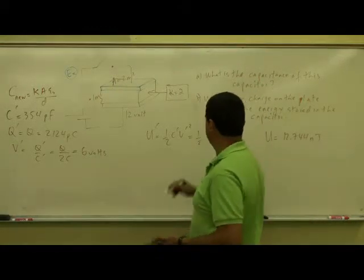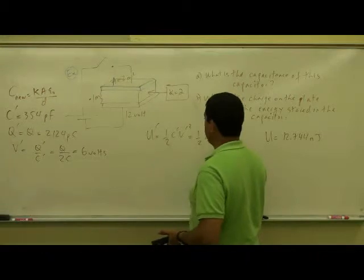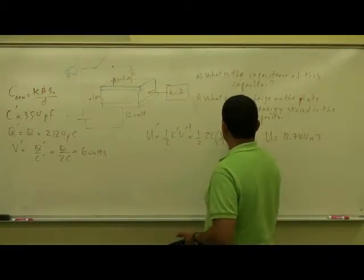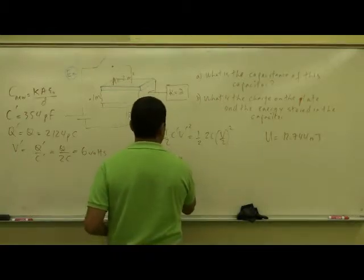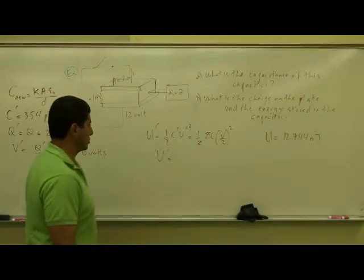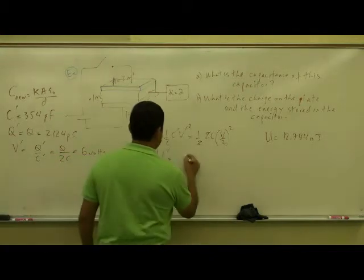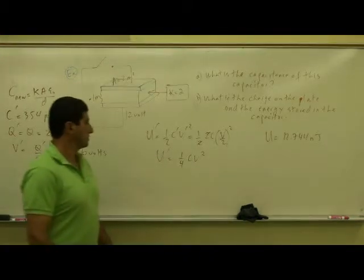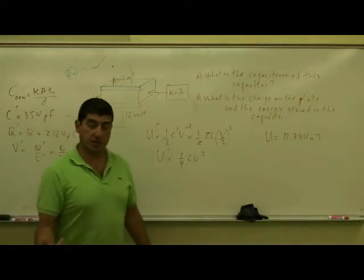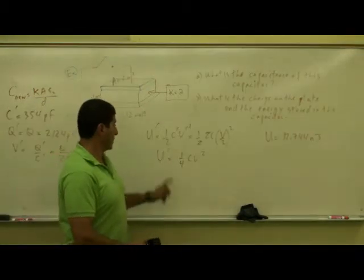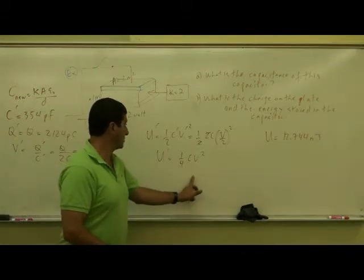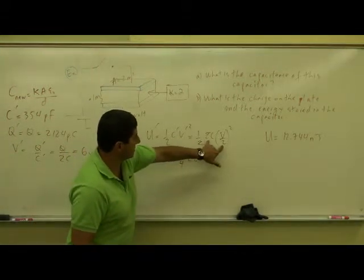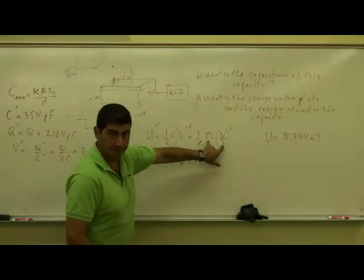The voltage has been halved. So the new potential energy is equal to, the two and the two cancel, and I have one-fourth CV squared, right? The original energy was one-half CV squared, right? So what happened is the numerator got doubled, but the denominator is a fourth, right?